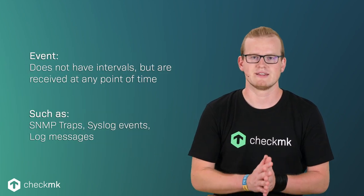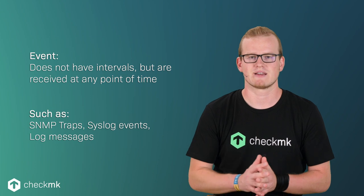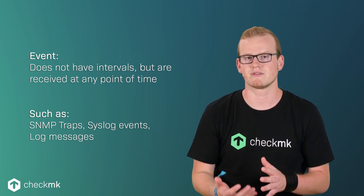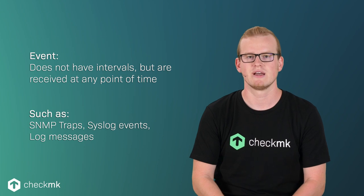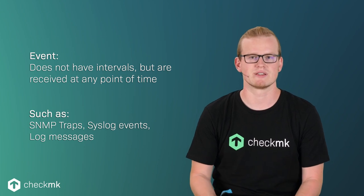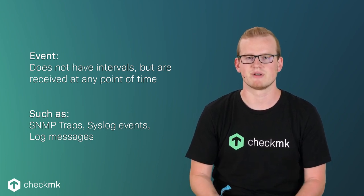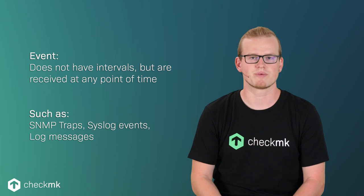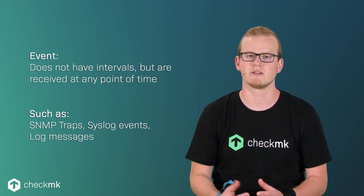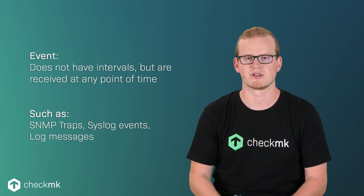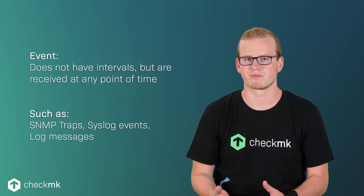On the other hand, events never have a certain interval. You never know when an event will be received, but it can be received at any point in time. For example, an SNMP trap or a log message could be sent at any time. There could be a critical issue on the device sending those messages, but you never know when this will occur.